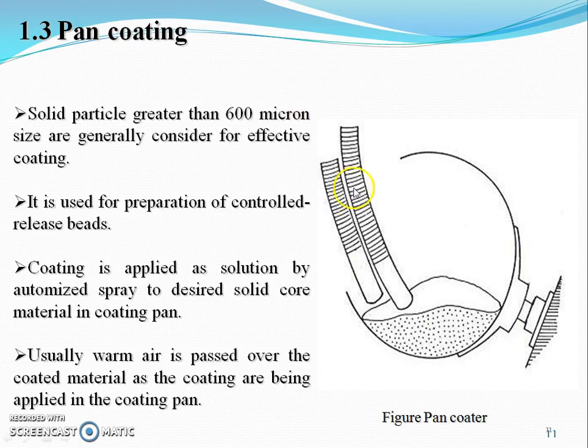The pan coating instrument looks like this. Solid particles greater than 600 microns in size are generally considered for effective coating. It is used for preparation of controlled release beads. Coating is applied as a solution by atomized spray to the desired solid core material in a coating pan, and warm air is passed over the coating material as it is being applied.